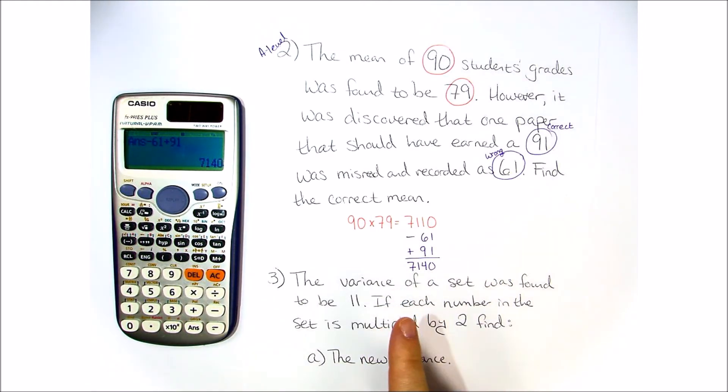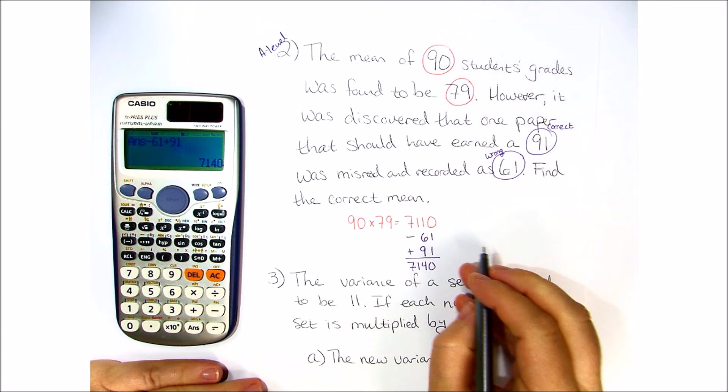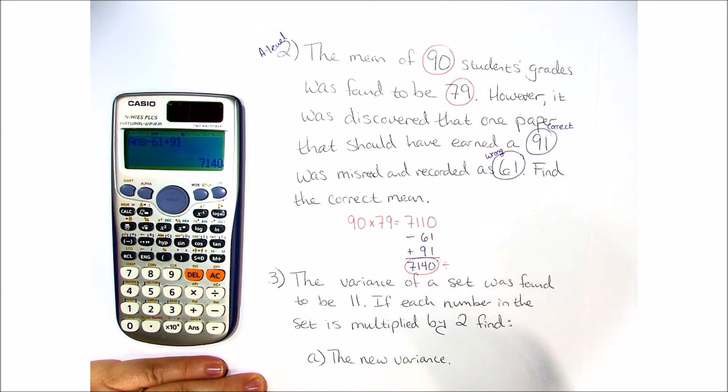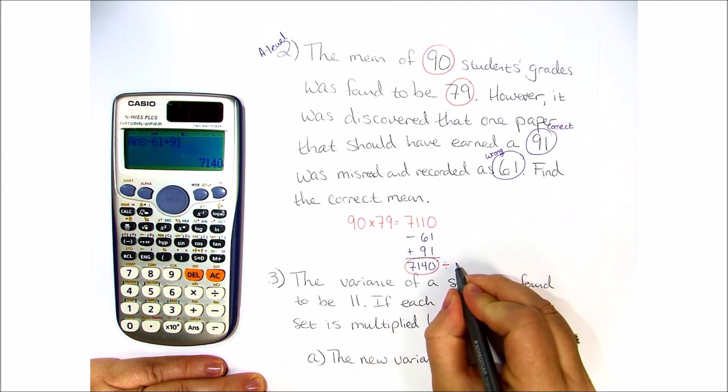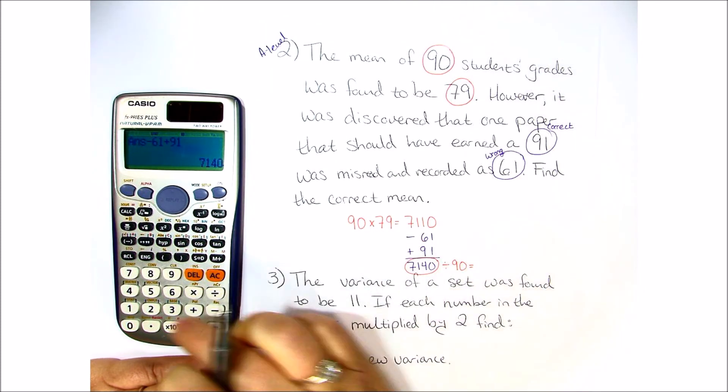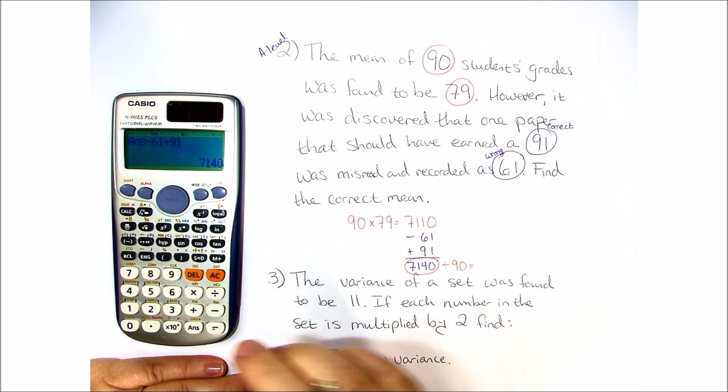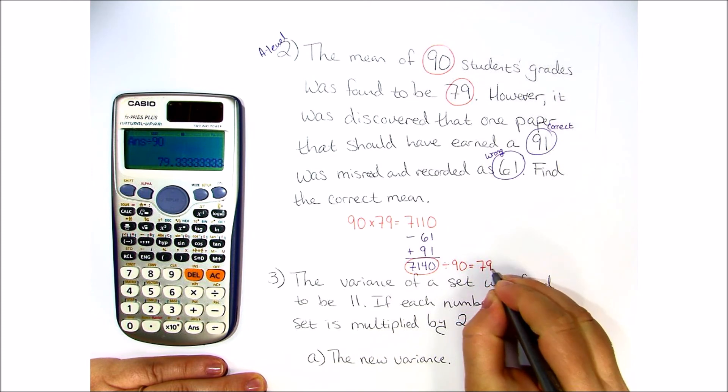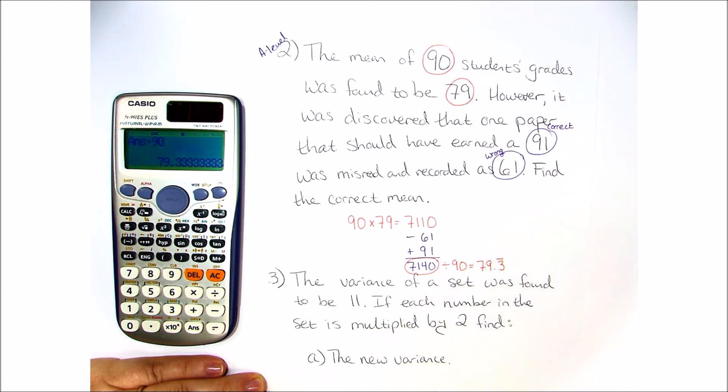Now this is the total. And as we know, when we do the mean, we need to find the total, but then we need to divide it by the number of people or students or objects present. In this case, 90. So 7,140 divided by 90 is 79.3 repeated.